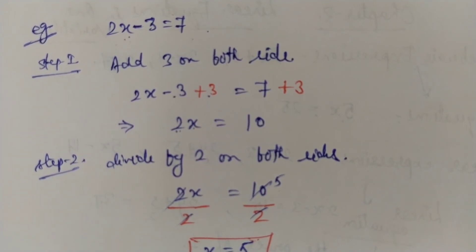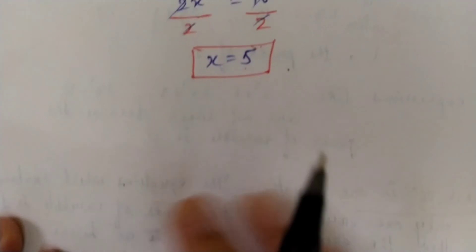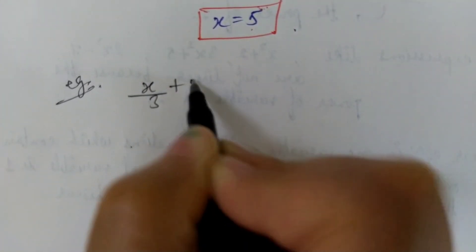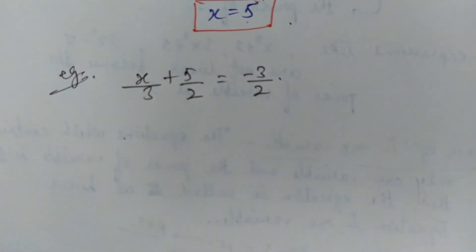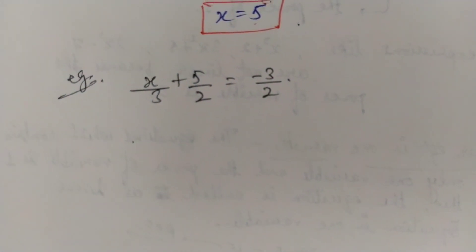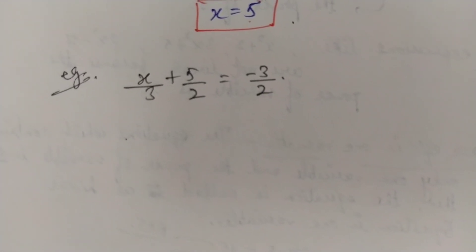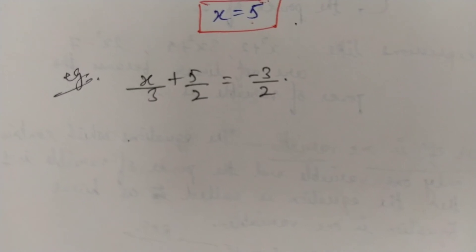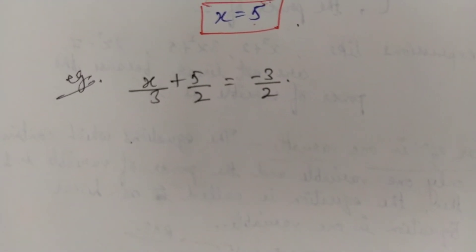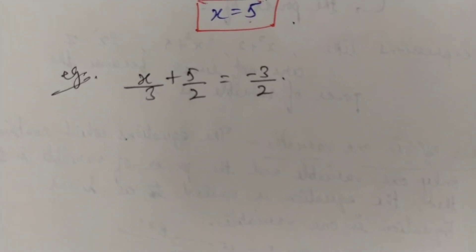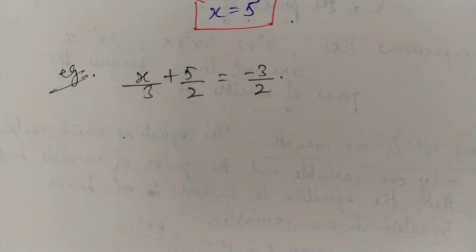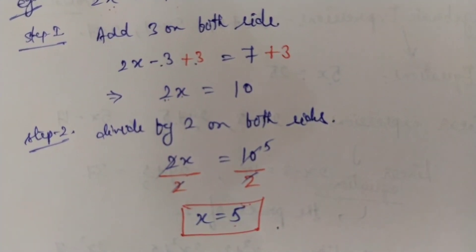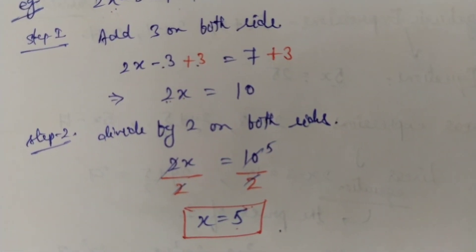Let me give you a practice example — you try it. Solve: x divided by 3 plus 5 by 2 equals minus 3 by 2. Solve this step by step. This is the proper full method. What we often do in short is called transposing — if there is multiplication on one side, you take it as division to the other side. This is what transposing means; we do it to save time and work faster, but the logic behind it is only this step-by-step method.